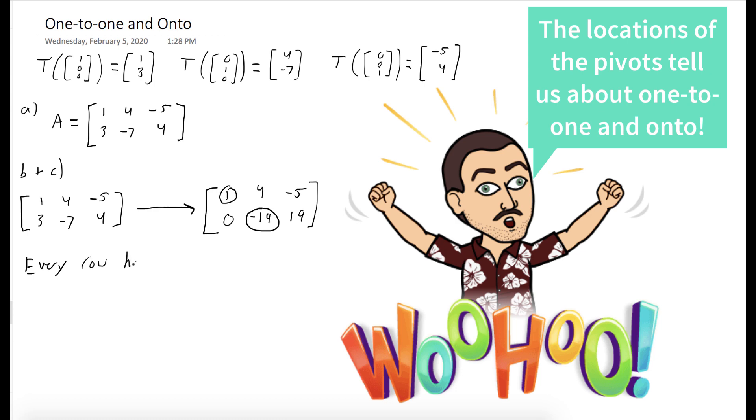Every row has a pivot, so that means our transformation is onto. T maps R³ onto R².